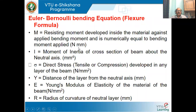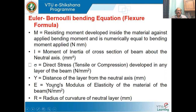With these assumptions we derive the Euler-Bernoulli bending equation. The notations used: M is the resisting moment developed inside the material, equal to the applied bending moment in Newton-millimeters. I is the moment of inertia in mm⁴. Sigma is the direct stress — tensile or compressive depending on whether it's above or below the neutral axis and the type of loading. Y is the distance from the neutral axis to the layer considered. E is the modulus of elasticity and R is the radius of curvature of the neutral layer.